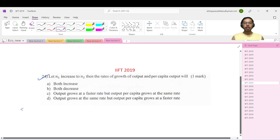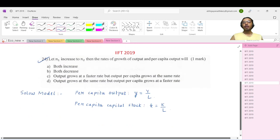This is basically a question with respect to Solow model. What is the per capita output? It is defined as small y equals capital Y by n, and your per capita capital stock is small k equals capital K by n. And your small y is basically f of small k.